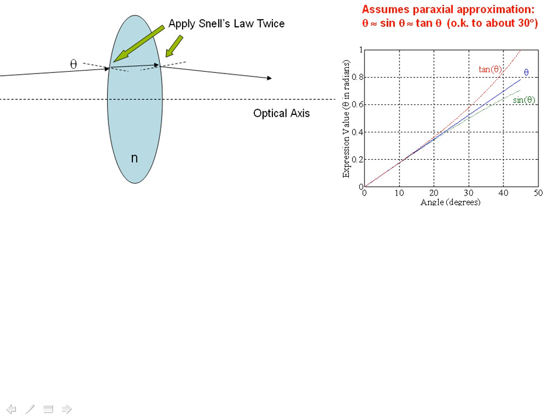And the paraxial approximation, of course, says that for small angles, theta in radians approaching zero, or theta in degrees approaching zero, that theta is equal to the sine of theta is equal to the tangent of theta. And this, of course, is true in radians and not degrees, but if you plot the angle in degrees, you see out to about 30 degrees, it's a pretty good assumption. And below 10 degrees, the paraxial approximation is a really good assumption.